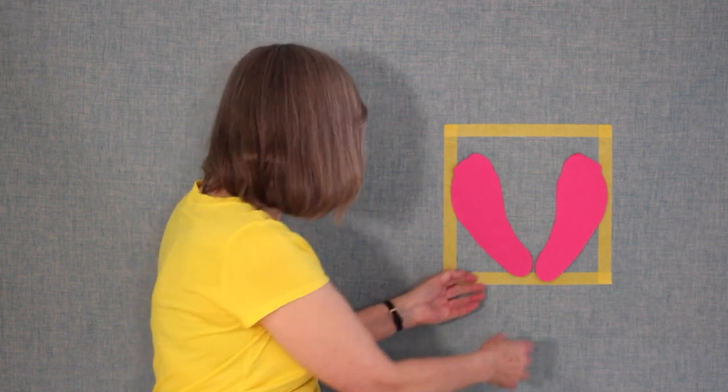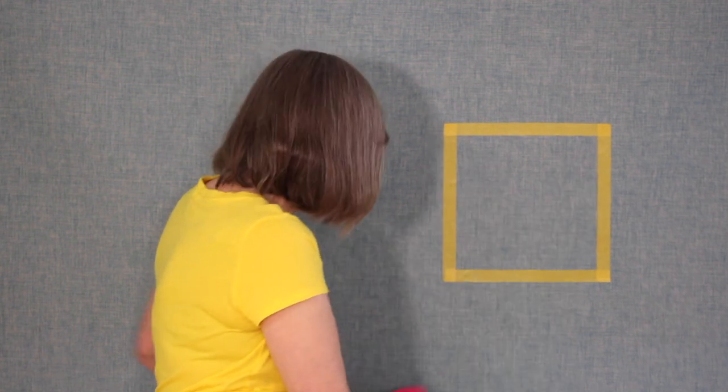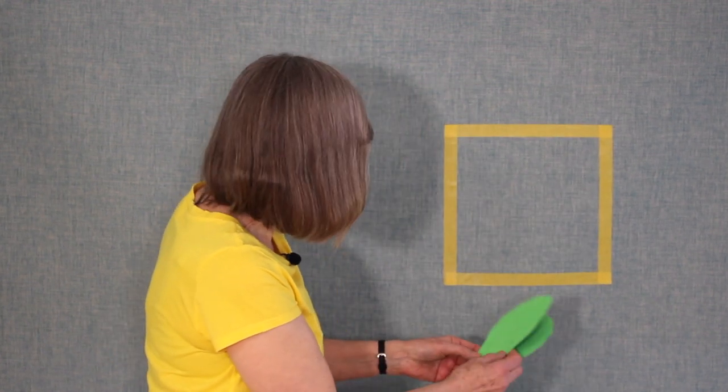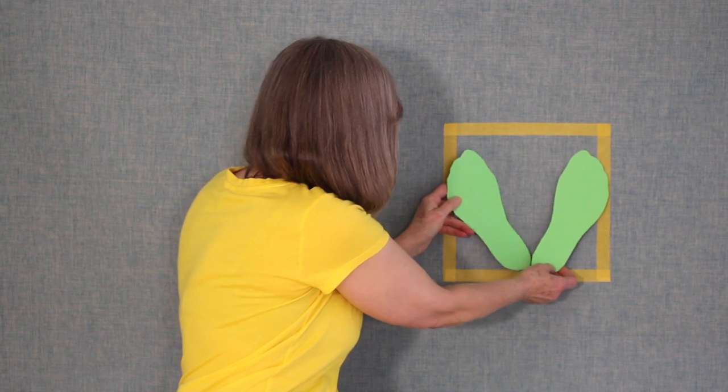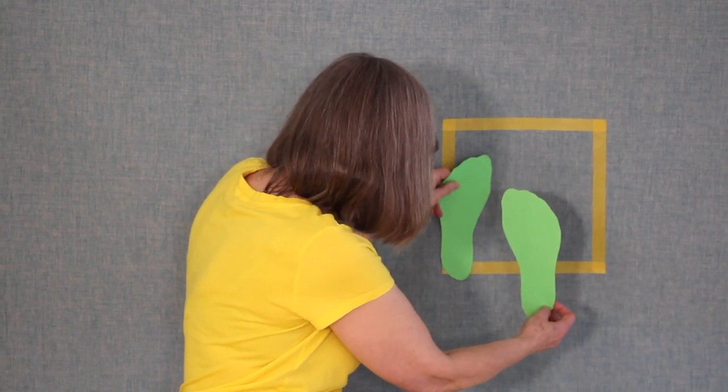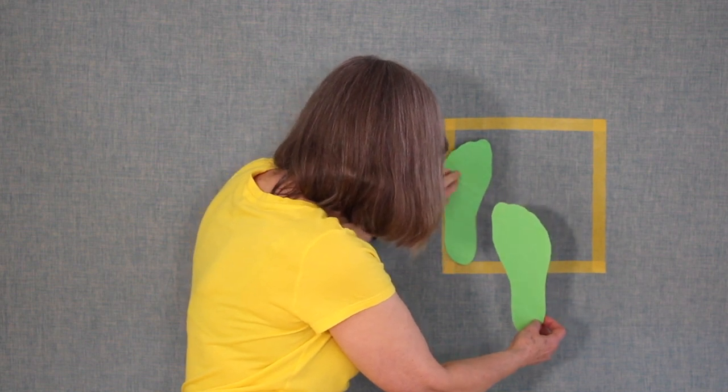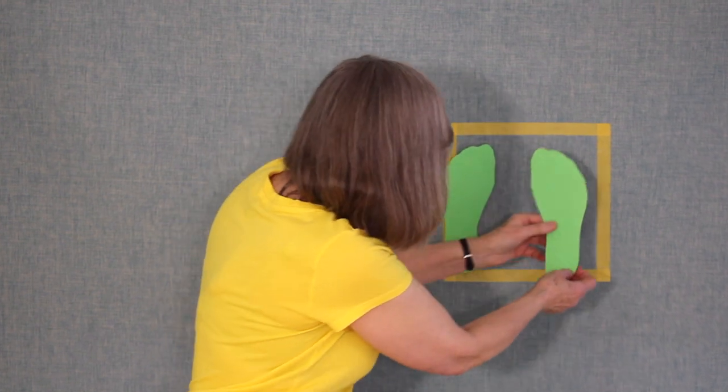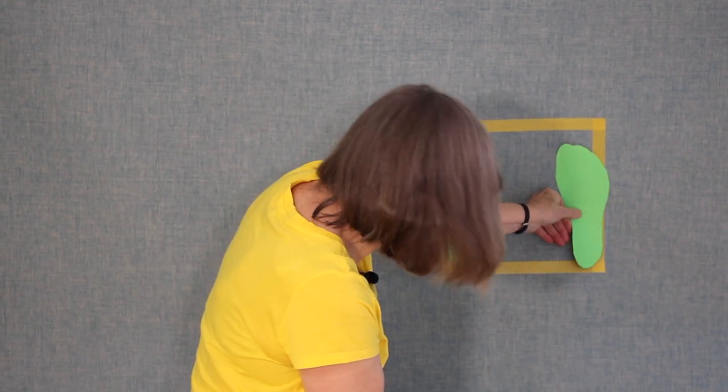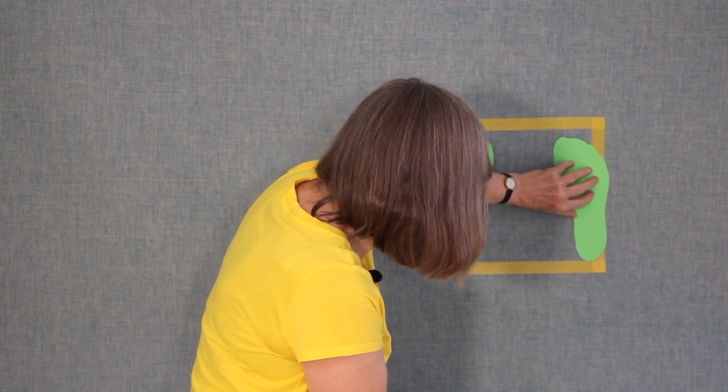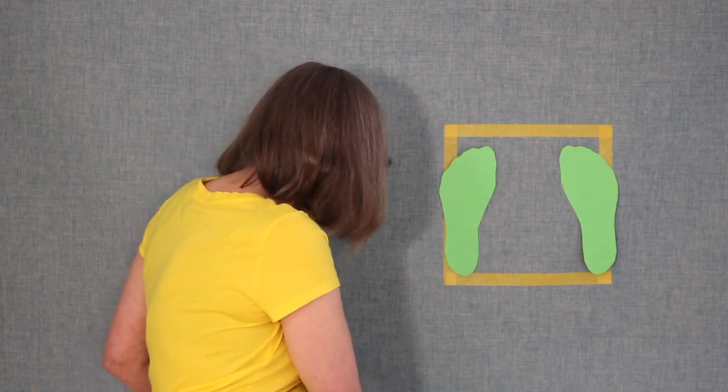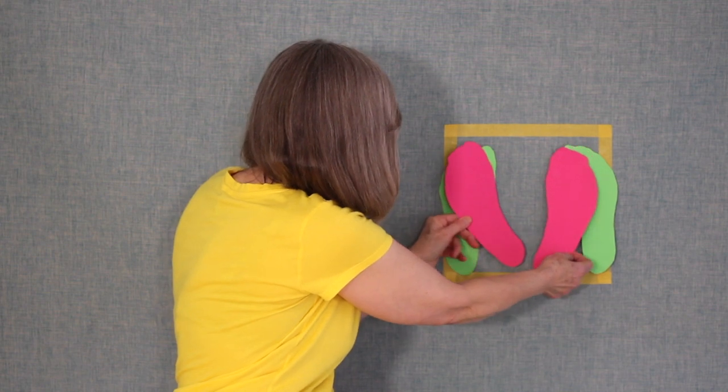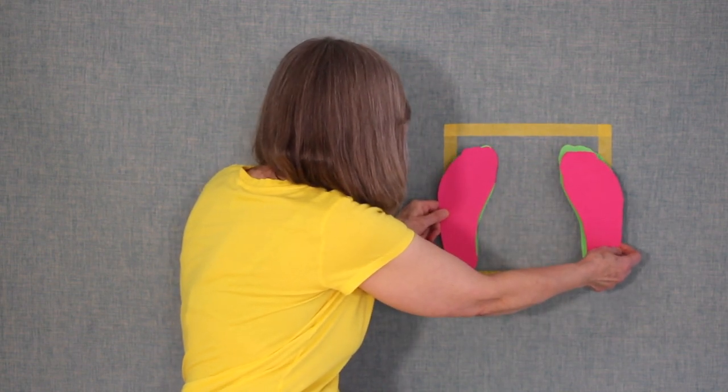And the next posture we have, I've got different colored feet here, is the horse stance posture. So if we're in this Wu Chi posture, and we turn our feet out, so we'll just put them out. So we'll just put them here. So the outside edge is parallel. There, best I can do. That is outside edge parallel of the feet. And there we have horse stance. So we've gone from the Wu Chi. And we've turned our feet out. And now we're in horse stance.